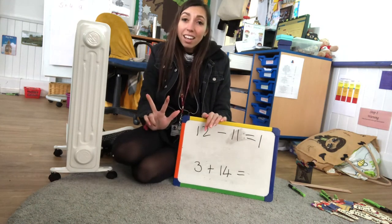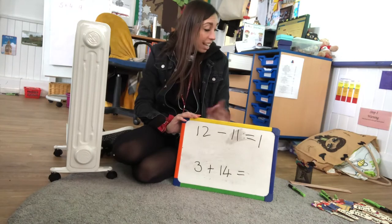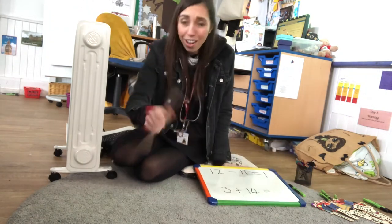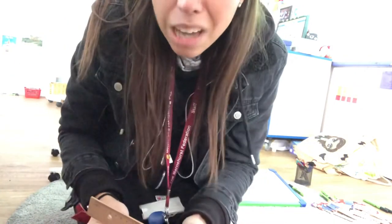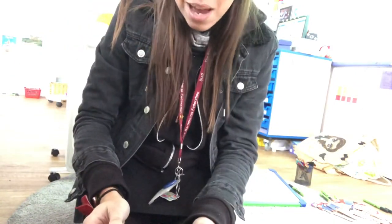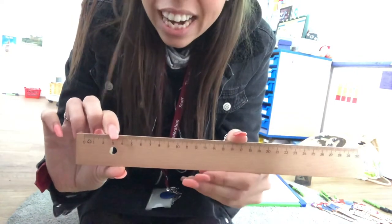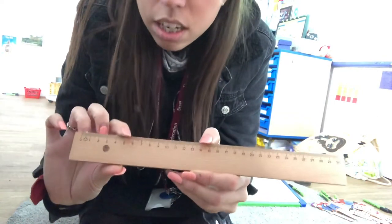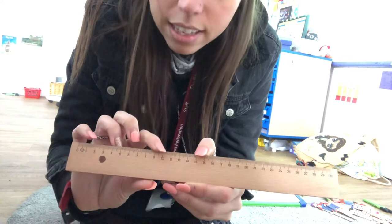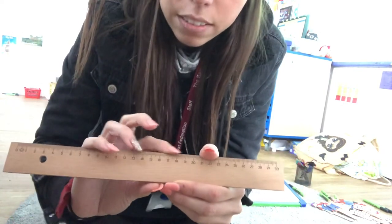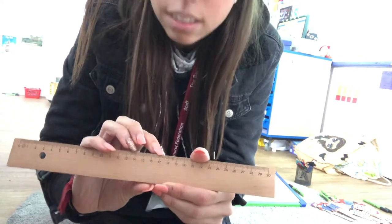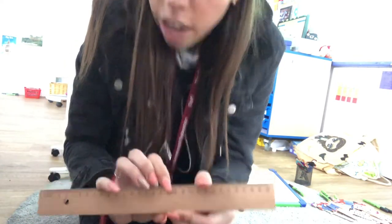If I have three and I've got to add 14, that's a very long way to go. I've got to do 14 jumps, and 14 jumps is a lot of jumps. So I find three and do 14 jumps: one, two, three, four, five, six, seven, eight, nine, ten, eleven, twelve, thirteen, fourteen — that gets me to 17. I got the right answer, but was it the quickest way to do it? Probably not.